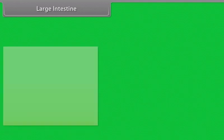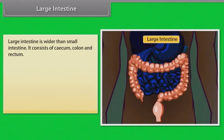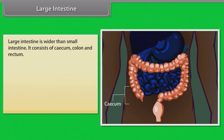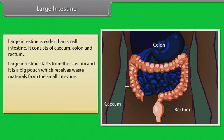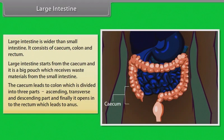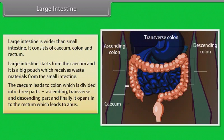The large intestine is wider than the small intestine and consists of the caecum, colon, and rectum. It starts from the caecum, which is a big pouch receiving waste materials from the small intestine. The caecum leads to the colon, which is divided into ascending, transverse, and descending parts, and finally opens into the rectum, which leads to the anus.